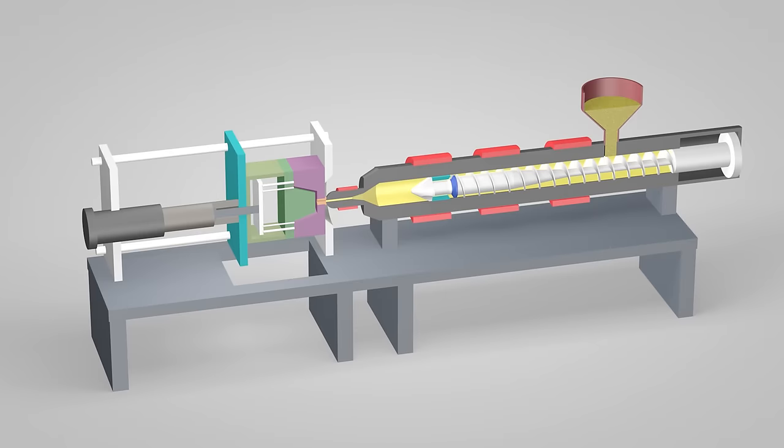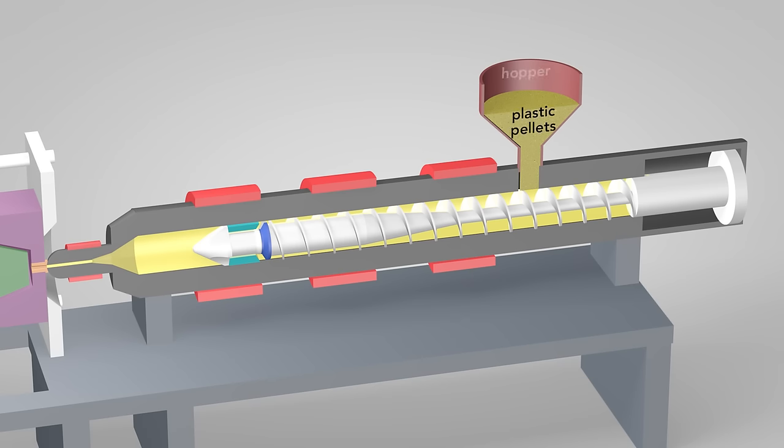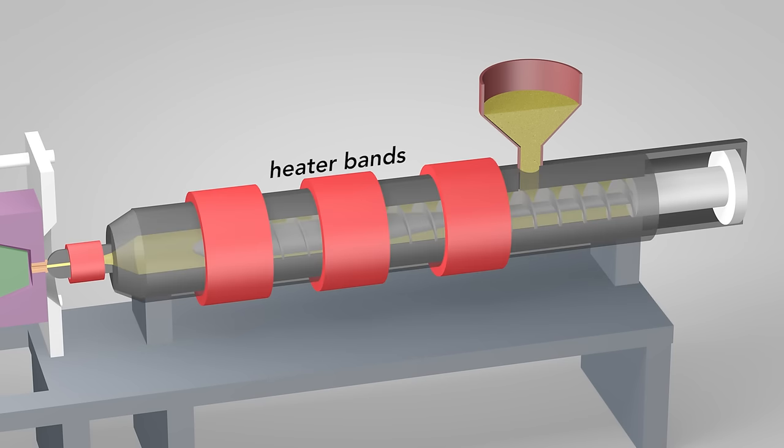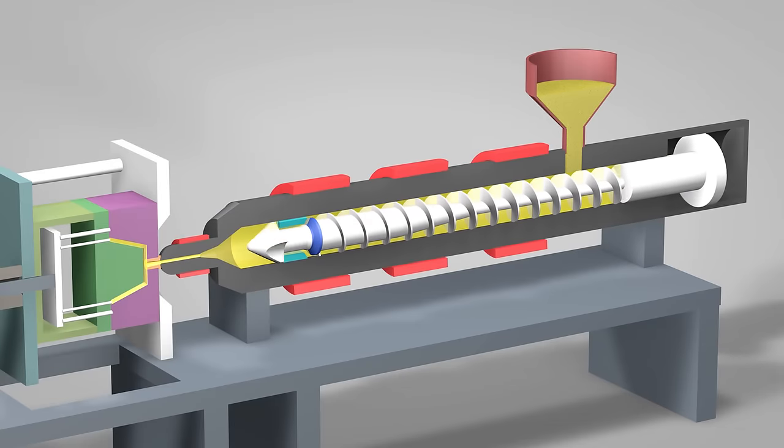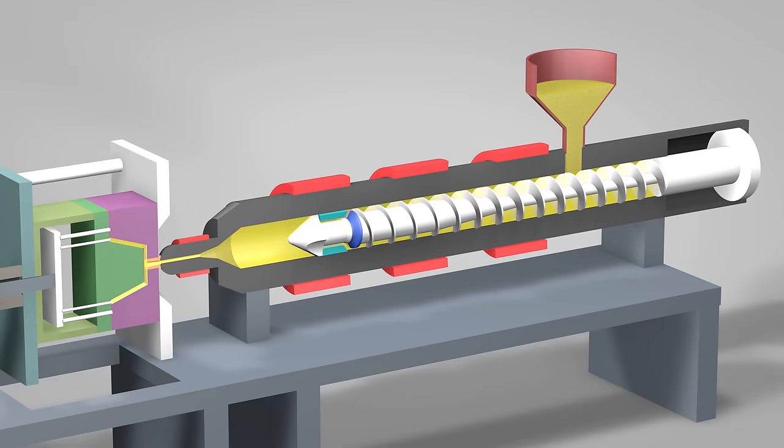An injection molding machine has three main parts: the injection unit, the mold, and the clamp. Plastic pellets in the hopper feed into the barrel of the injection unit. Inside the barrel, a screw transports the pellets forward. Heater bands wrapped around the barrel warm up the plastic pellets. As the pellets are moved forward by the screw, they gradually melt and are entirely molten by the time they reach the front of the barrel.